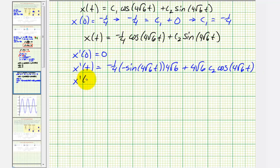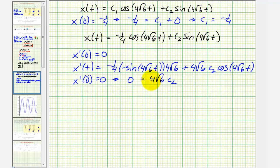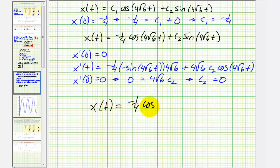Since x prime of zero equals zero, we substitute t equals zero. The sine zero term becomes zero, and cosine zero is one, so we have zero equals 4 square root 6 · c sub 2. Dividing both sides by 4 square root 6, c sub 2 equals zero. Therefore the equation of motion, or the particular solution, is x of t equals negative one-fourth cosine(4 square root 6 · t).